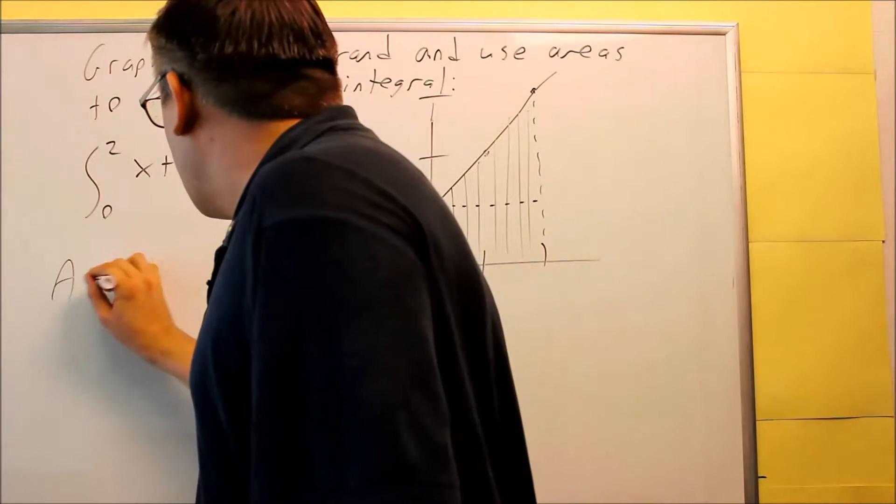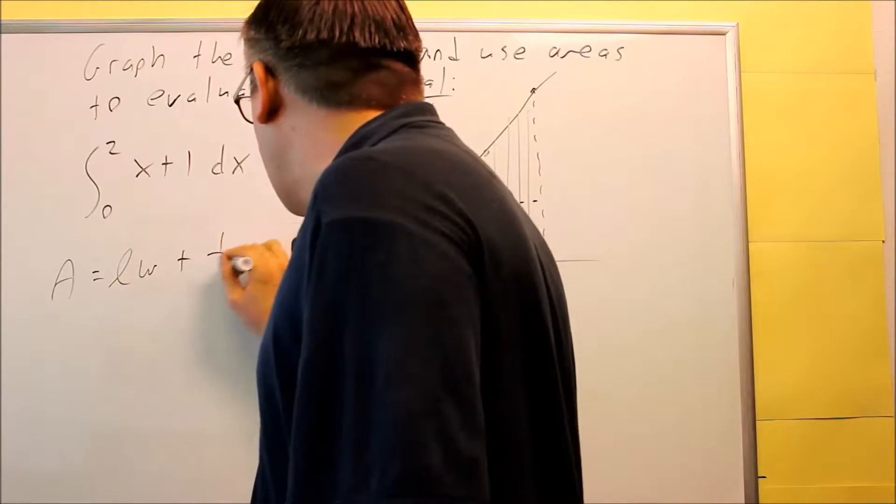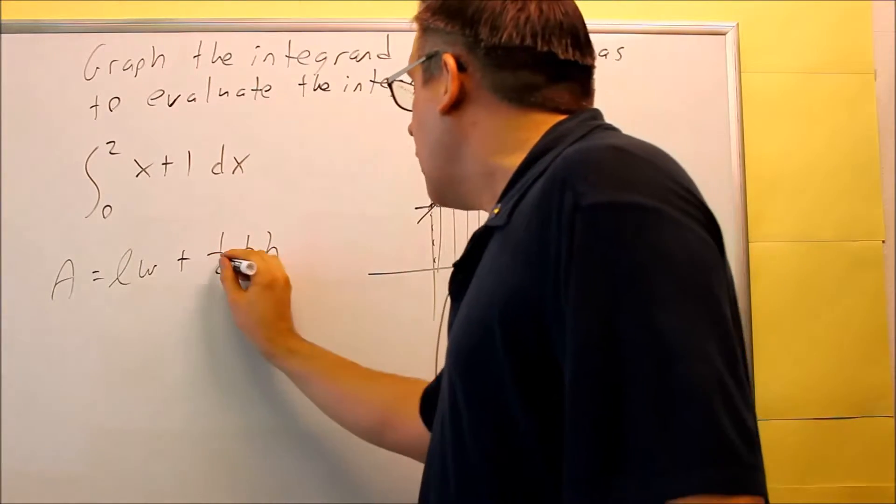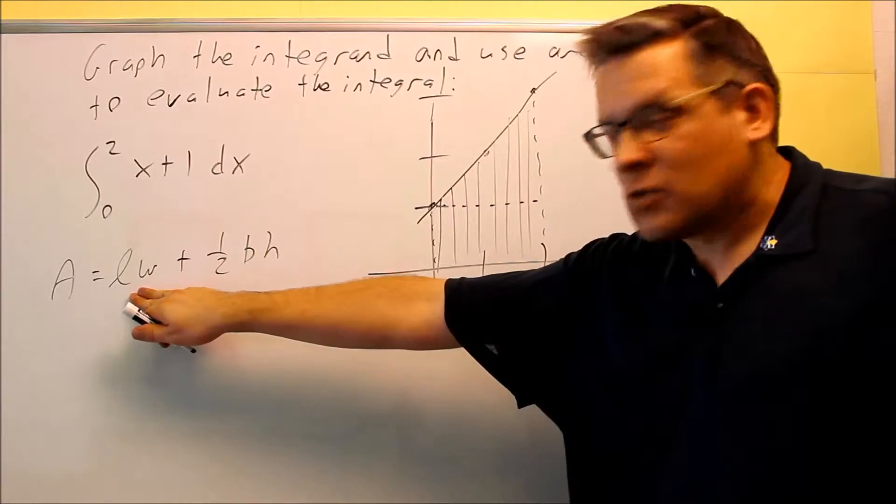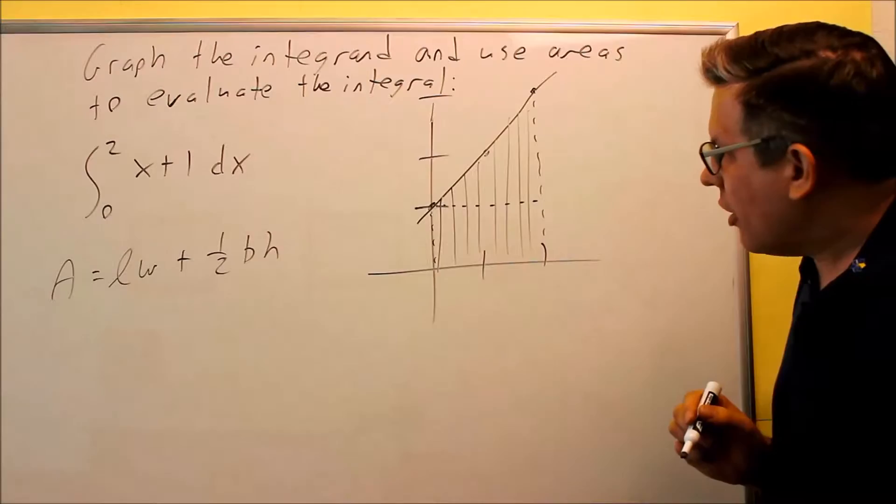So we're going to do area equals, basically we're going to do length times width, and then plus 1/2 base times the height. So we're going to do area of a rectangle first, that's this part, and then we'll do the area of the triangle, add them together, that will get me the total area.